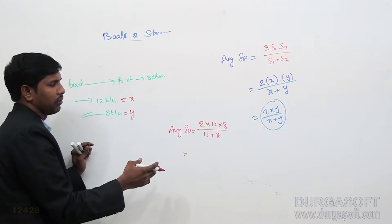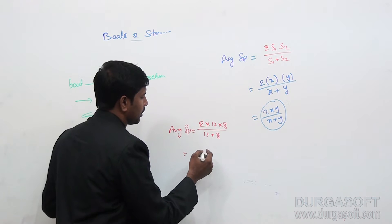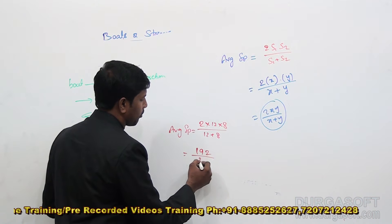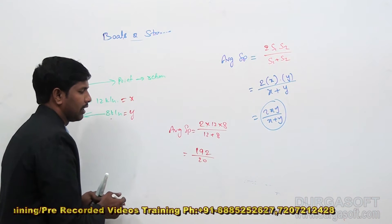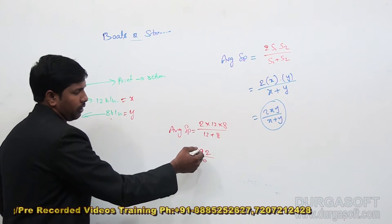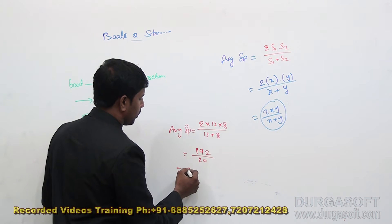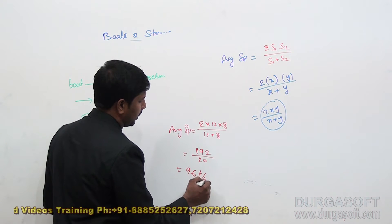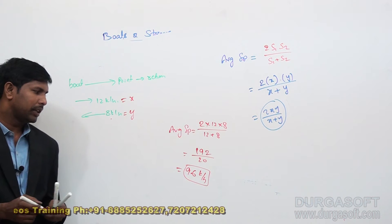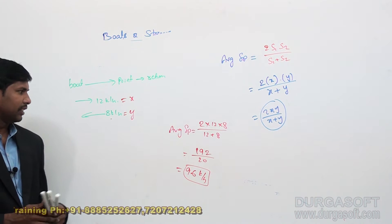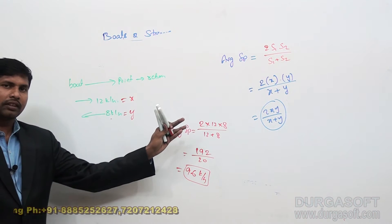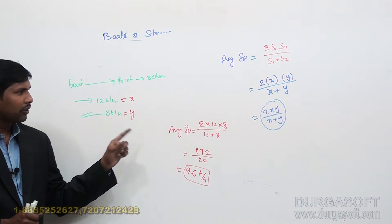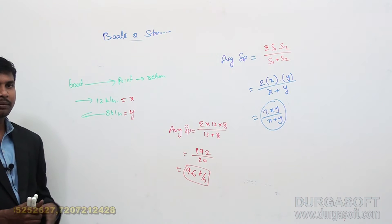So this is 24 into 8 over 16, giving 192 by 20. The average speed comes out to 9.6 kilometers per hour. So the average speed is 9.6 km/h when the boat goes to a point and returns to the starting point. This is how we calculate the required average speed when downstream and upstream speeds are given.